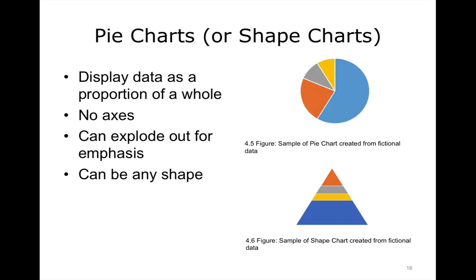Pie charts, or shape charts — because they don't always have to be in a pie shape — display the data as a proportion of the whole. You have 100% of something split into different categories; for example, this pie chart could represent the percentage of patients with a particular insurance or payer. A pie chart does not have any axis like bar or line charts, and you can explode parts of your pie chart for emphasis.